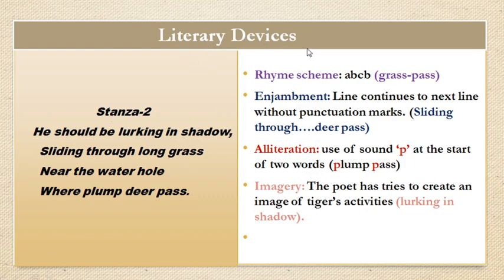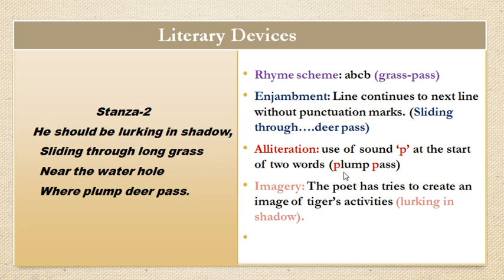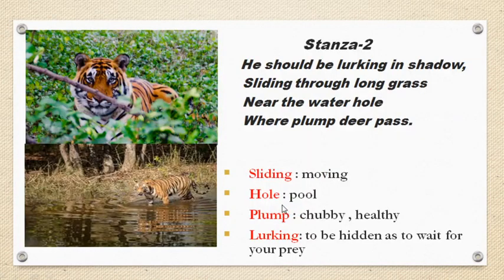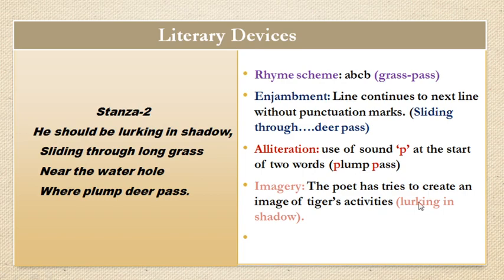Literary devices in stanza 2. The rhyming scheme is A-B-C-B: shadow (A), grass (B), hole (C), pass (B). Enjambment: the line continues to the next line without punctuation mark — 'sliding through deer pass.' Alliteration: use of the sound P at the start of two words — 'plump' and 'pass.' Imagery: the poet has tried to create an image of the tiger's activities — lurking in shadow.